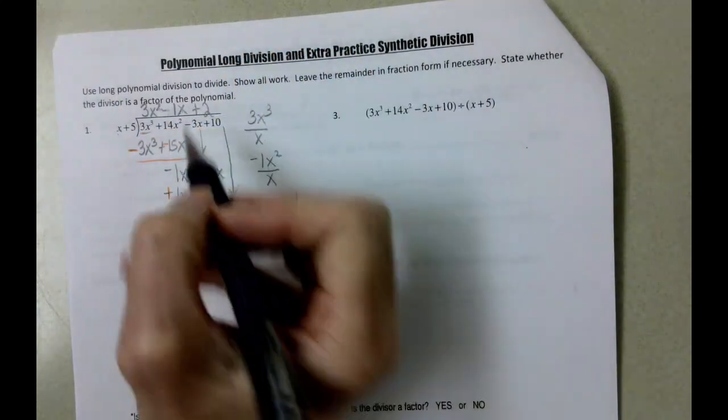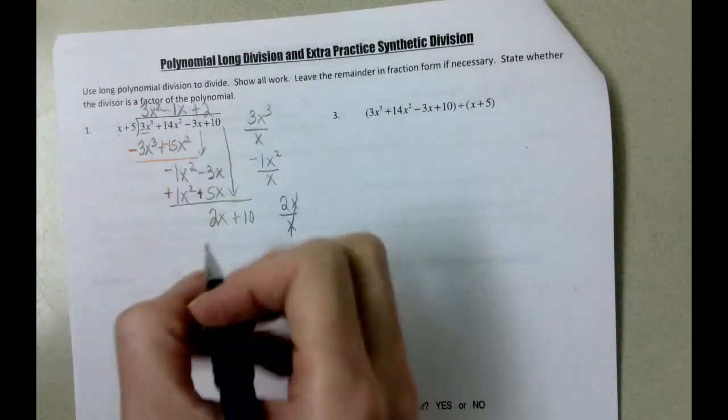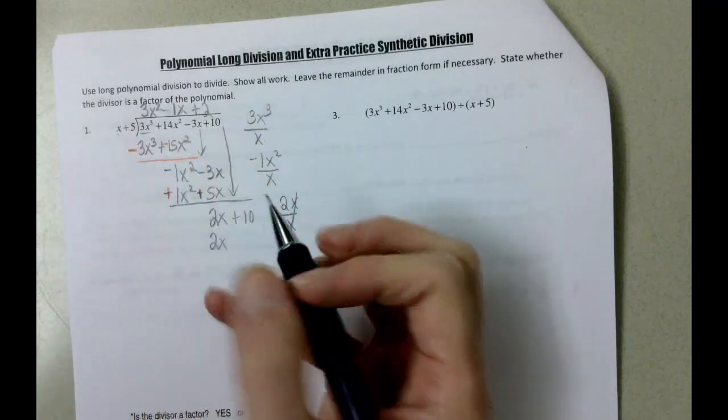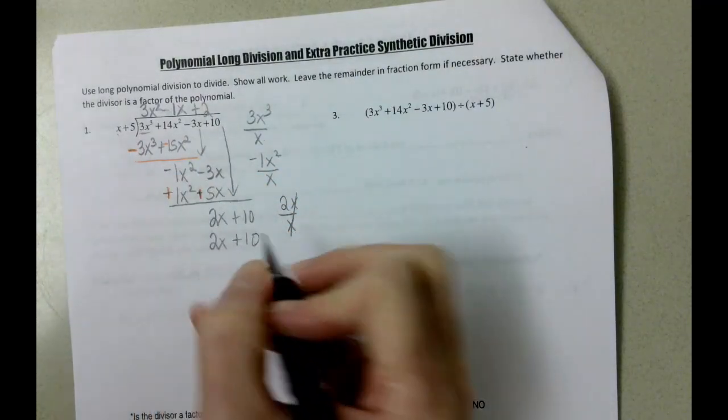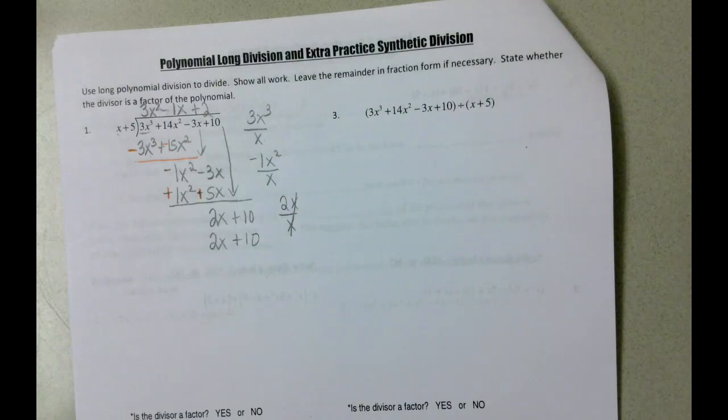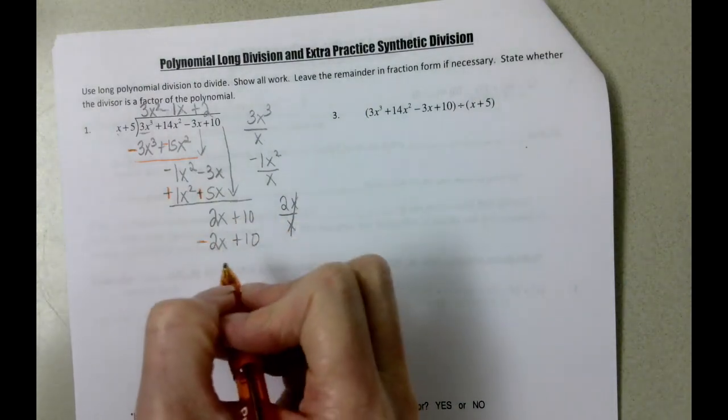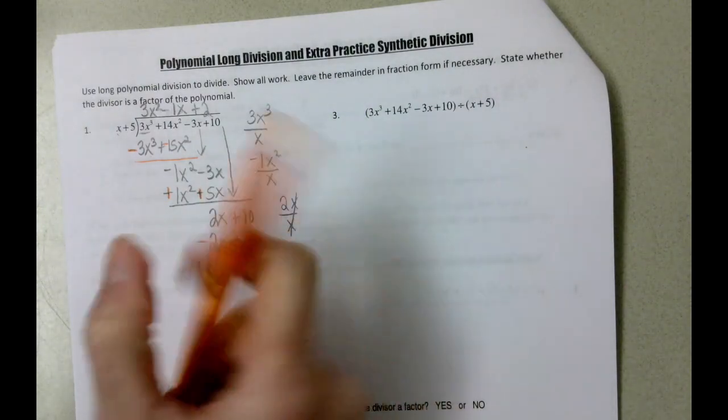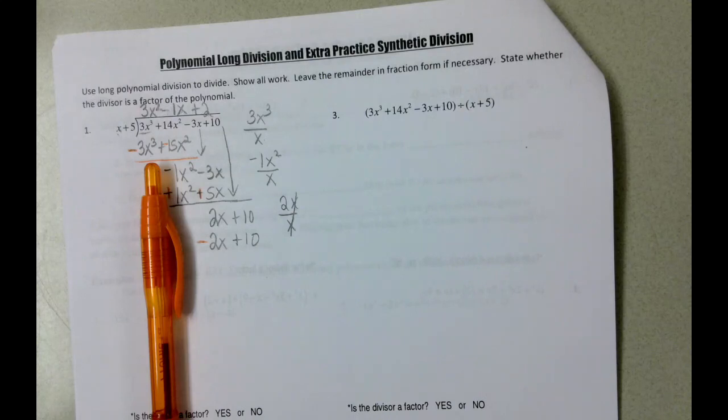And then we take 2 times x is 2x, 2 times 5 is 10. And now that we've got that, we're going to change both sides. I'm hoping that my video did not just turn off.